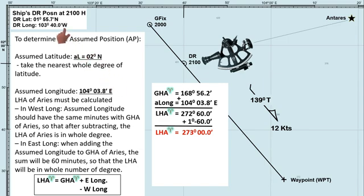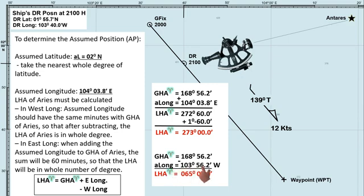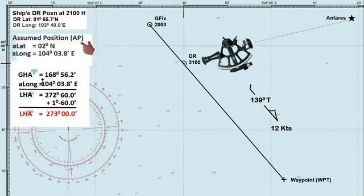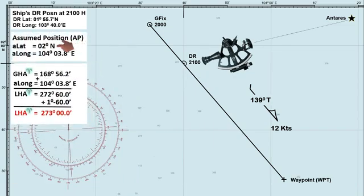But what if our DR longitude is west? Then our assumed longitude is 103 degrees, 56.2 minutes, and our LHA is 065 degrees. To find LHA, subtract westerly longitude from GHA. So the minutes of our assumed longitude should be the same as the minutes of our GHA, so that the minutes of LHA will be 0. Always remember that when choosing our assumed longitude, it should be nearest to our DR longitude. In this scenario, our assumed latitude is 2 degrees north, and our assumed longitude is 104 degrees, 3.8 minutes east.